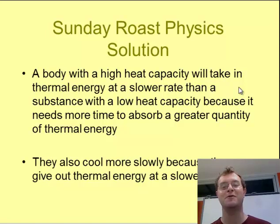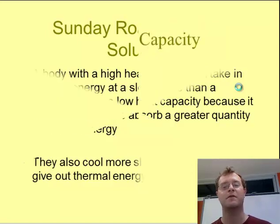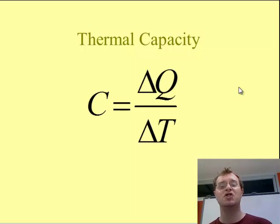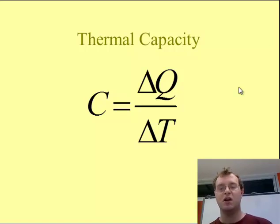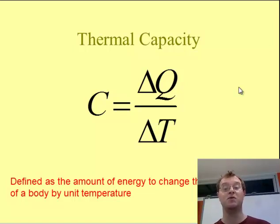This thing called thermal capacity also describes when things cool down — it's the reason why some things cool down quicker than others. Thermal capacity is shown as capital C. It is the change in energy per change in temperature — the energy required to change the temperature of a body by one unit temperature.